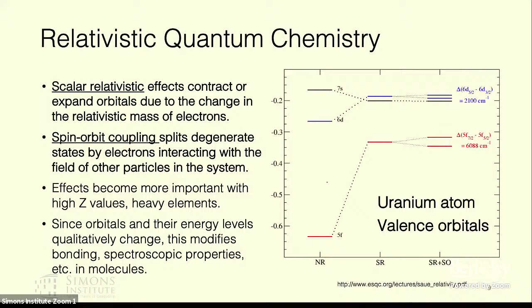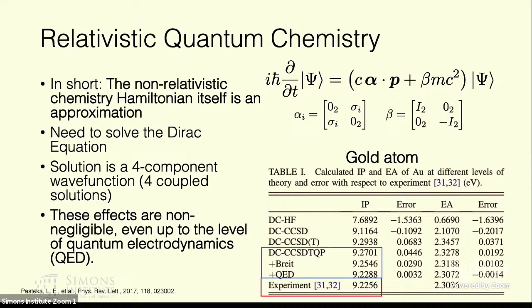If you introduce special relativity and the fact that the speed of light is finite, then you get two major effects. One of them typically referred to as scalar relativistic effects which actually provide a contraction or expansion of core orbitals, and then also degenerate splittings called spin-orbit coupling. So you can see with these heavy elements, these additional effects added into the Hamiltonian actually comprise of a completely qualitatively different picture. So the takeaway here is that the non-relativistic chemistry Hamiltonian itself is an approximation.